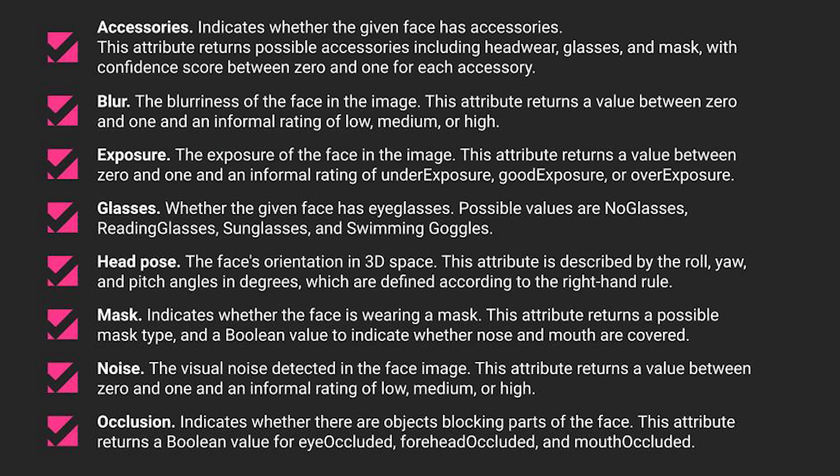Here's a full list of attributes that you can get from it. The first is accessories — this attribute returns things like hats, glasses, and masks, and it gives a confidence score between 0 and 1 for each of them. Blur tells you how blurred the face is — for example, this can tell you if the face is the main focus of an image. You also get things like exposure, noise, and if there are any objects that are blocking the face in the image.